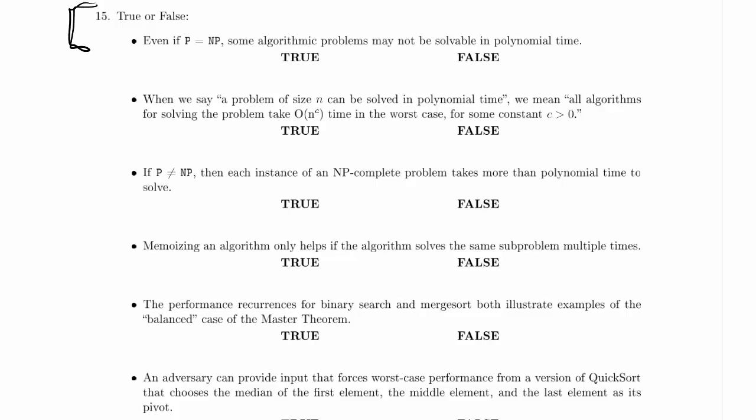Even if P equals NP, some algorithmic problems may not be solvable in polynomial time. That's true. There are some algorithmic problems that we know, for example, are unsolvable, so they're certainly not solvable in polynomial time. There are ones that we know take more than polynomial time, and it's not subject to P equals NP.